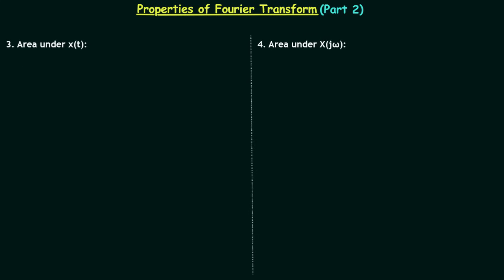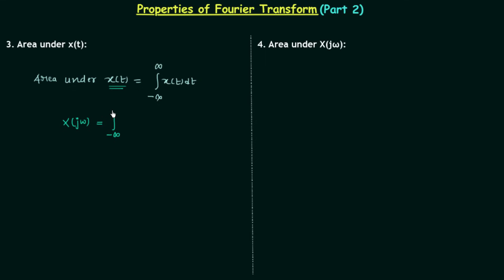Let's begin our discussion with the third property, which is area under x(t). Whenever we need to calculate the area under a given signal, we simply perform the integration one time of the given signal. So the area under time domain signal x(t) is equal to the integration of x(t) with respect to time from minus infinity to infinity. We know the formula to calculate the Fourier transform: X(jω) is equal to the integration from minus infinity to infinity of x(t) multiplied by e to the power minus jωt dt.